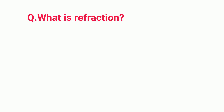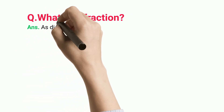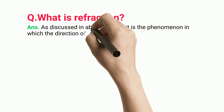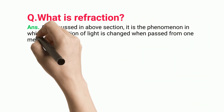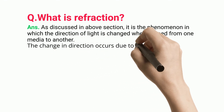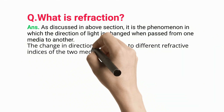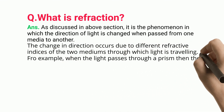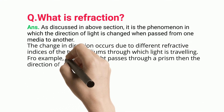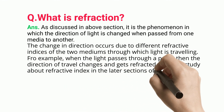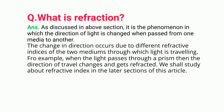What is refraction? Refraction is the phenomenon in which the direction of light is changed when passed from one medium to another. The change in direction occurs due to the different refractive indices of the two mediums through which light is traveling. For example, when light passes through a prism, its direction of travel changes and gets refracted.